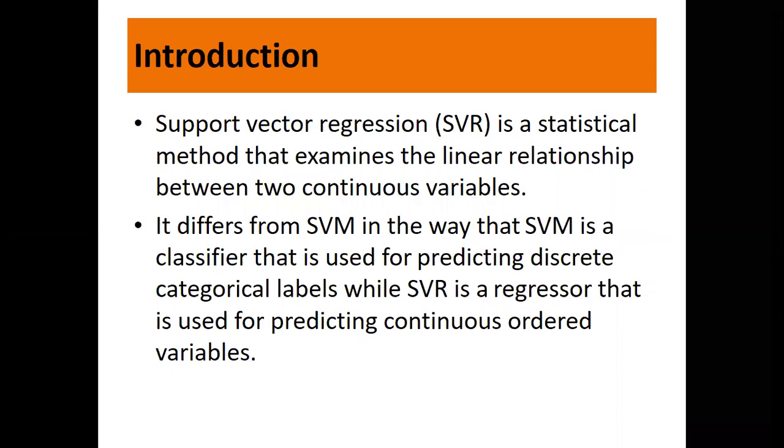Support vector regression is a statistical method that examines the linear relationship between two continuous variables. It differs from SVM in the way that SVM, that is support vector machine, is a classifier used for predicting discrete categorical labels, while SVR is a regression used for predicting continuous ordered variables.